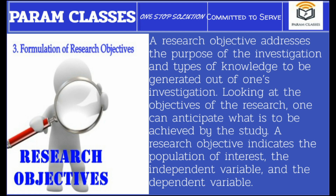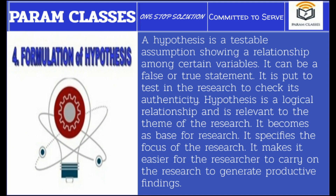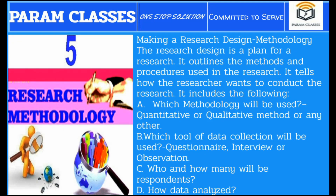Third is formulation of research objectives. A research objective addresses the purpose of the investigation and the types of knowledge to be generated out of one's investigation. Looking at the objectives of the research, one can anticipate what is to be achieved by the study. Fourth step is formulation of hypothesis. A hypothesis is a testable assumption showing a relationship among certain variables. It can be a false or true statement, and it is put to test in the research to check its authenticity.